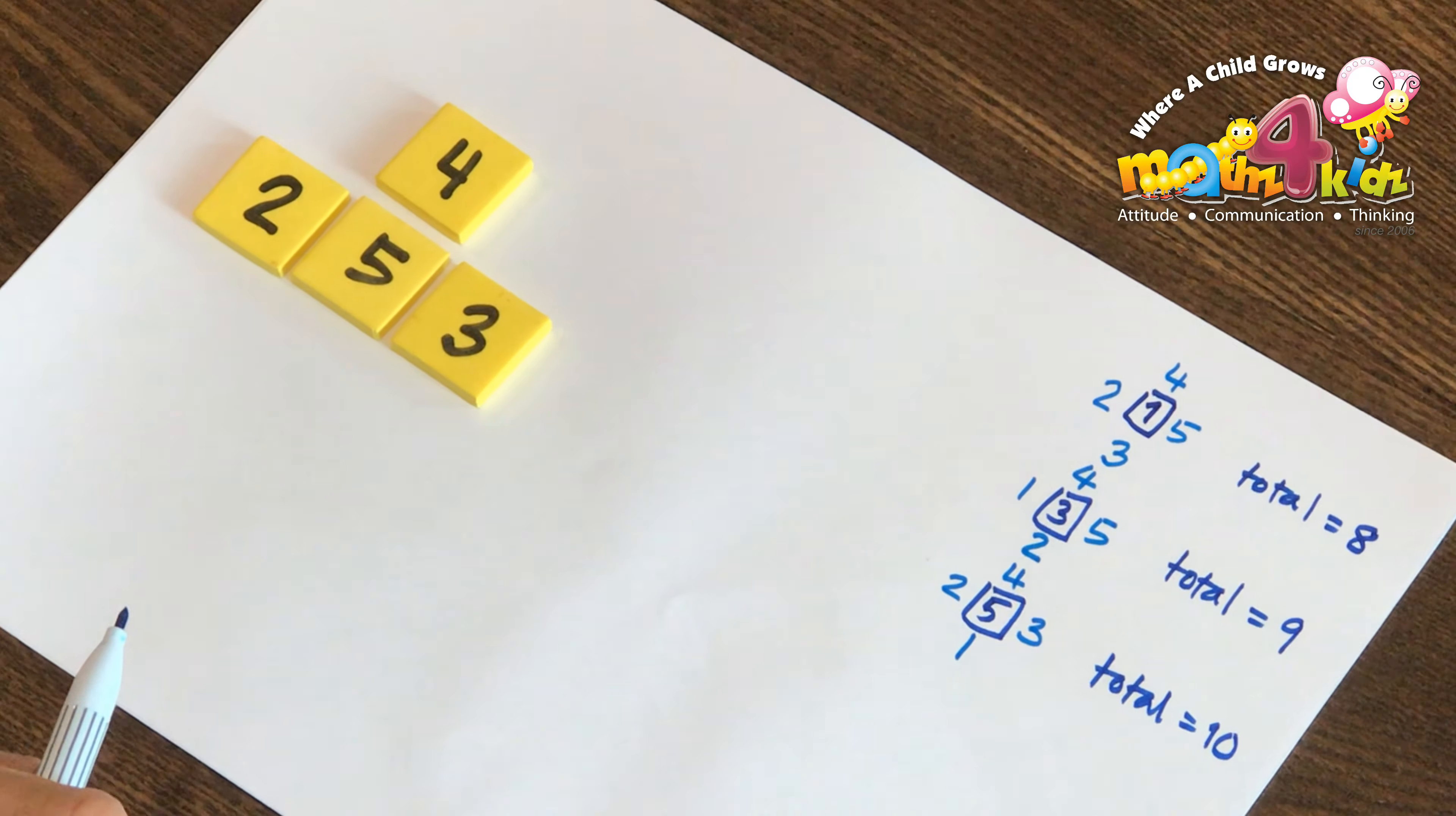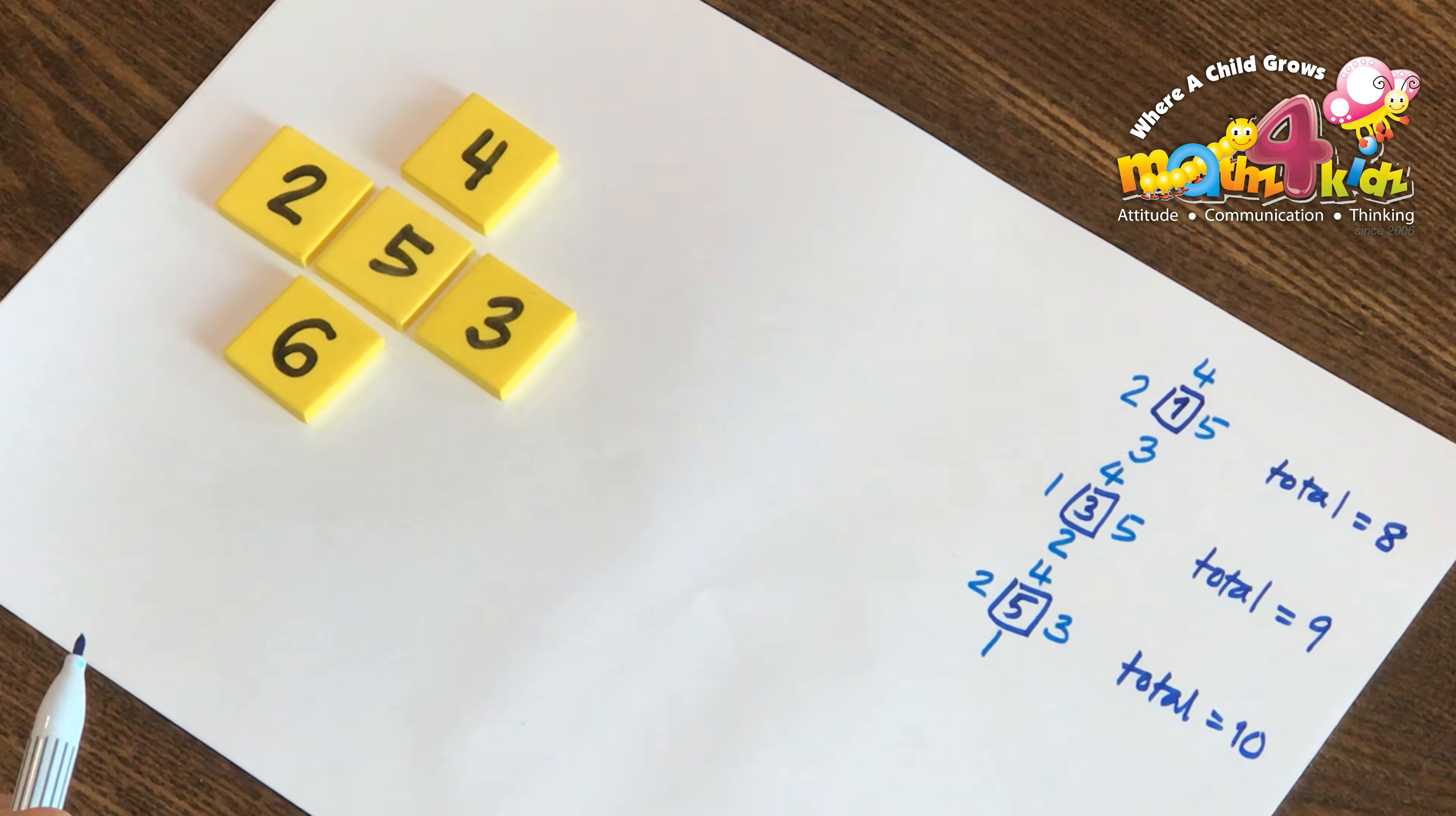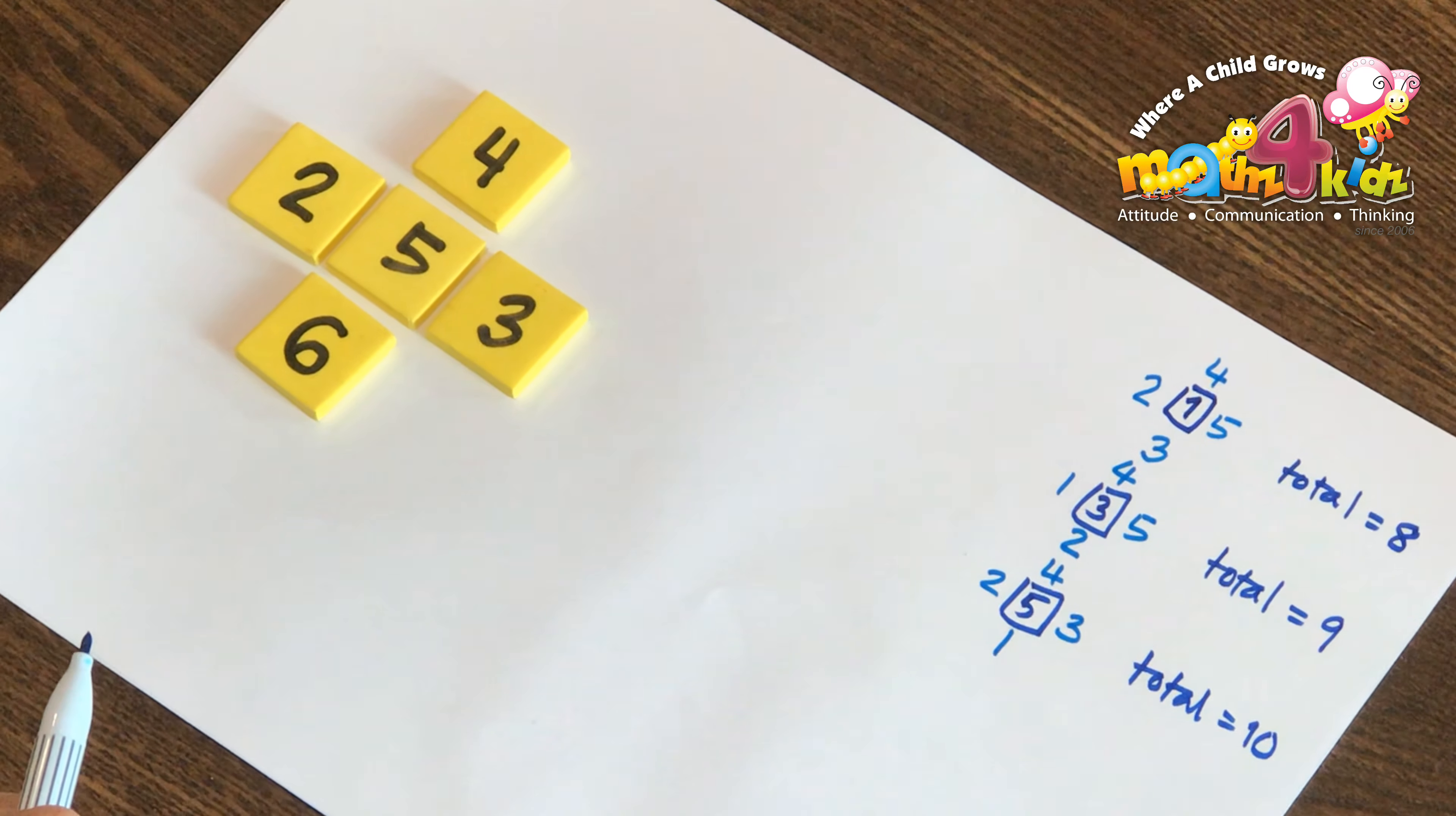Why don't you try with other consecutive numbers? Instead of 1, 2, 3, 4, 5, why don't you try with 2, 3, 4, 5, 6? Can I leave that to you?